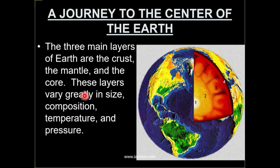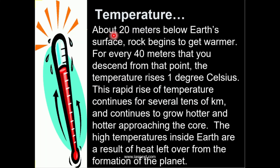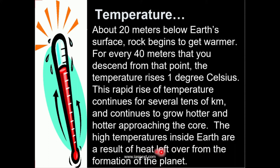All these layers have different composition, different temperature, and different properties. As we move 20 meters below the earth's surface, the rock begins to get warmer. For every 40 meters that you descend, the temperature rises by 1 degree Celsius. The rapid rise of temperature continues for several tens of kilometers and the earth continues to grow hotter. The high temperatures inside the earth are the result of the heat left over from the formation of the planet.